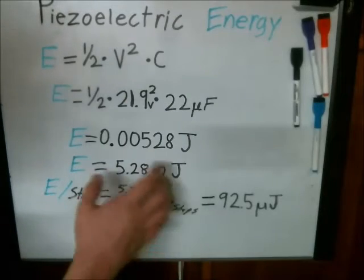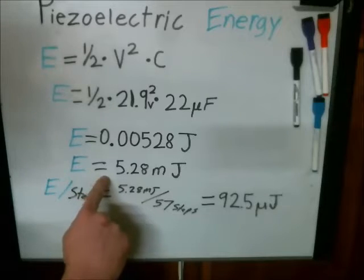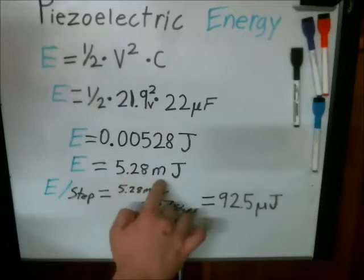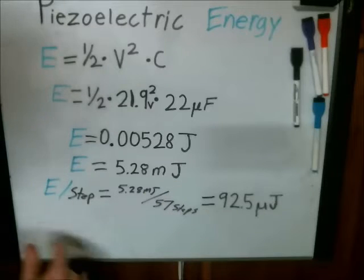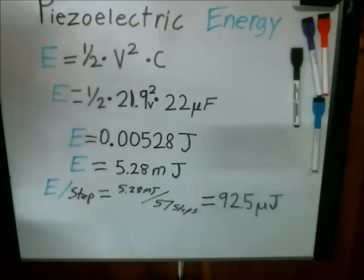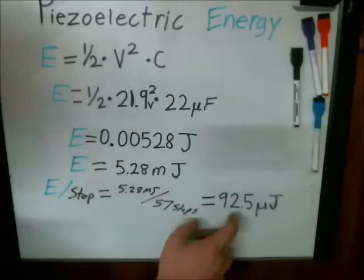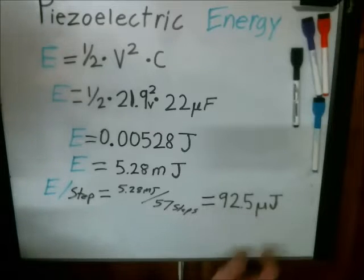Anyway, so all that and the end result of the charge of the capacitor was 5.28 millijoules. So that's very little energy. And I did the calculation assuming each step generated the same amount of energy. That came to being 92.5 microjoules per step.